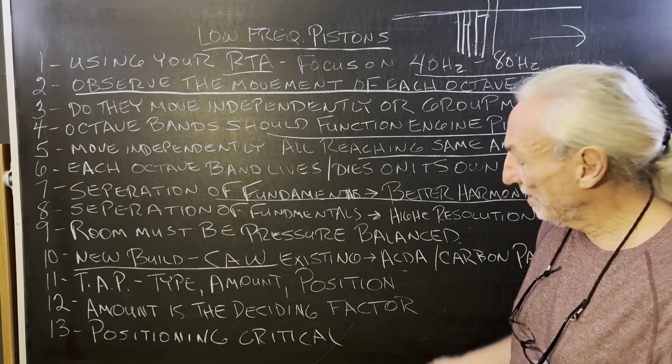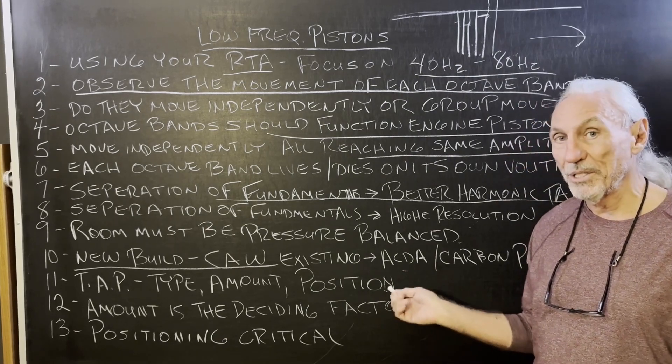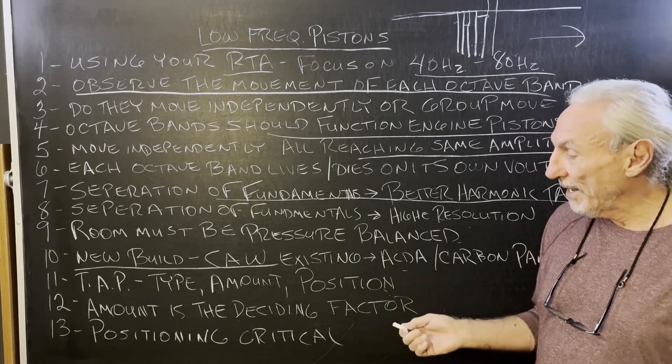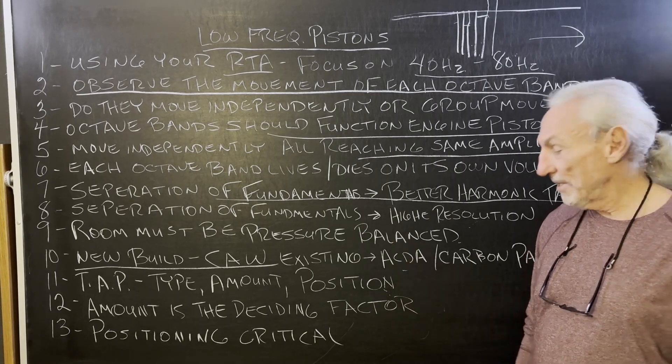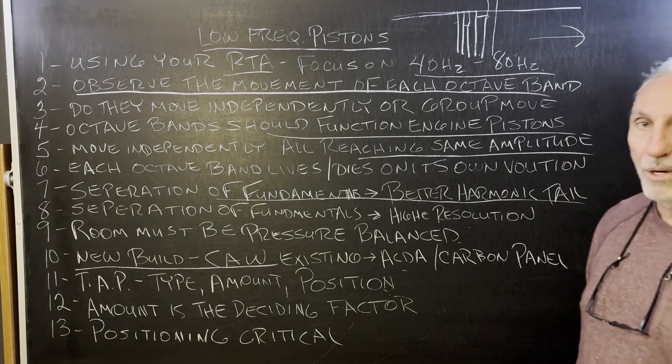If you can't do a new build, type, amount, position—you always got to keep all that in mind. If you have an existing facility, then it's freestanding units—it's the carbon panel or our ACDA series depending on what your issues are.